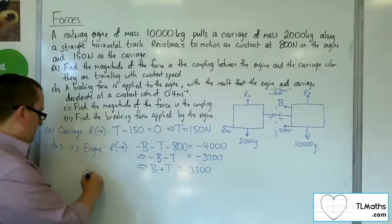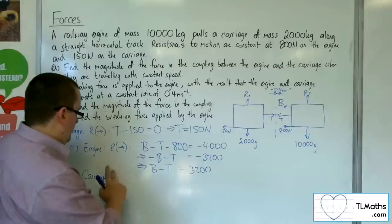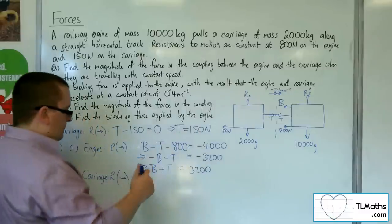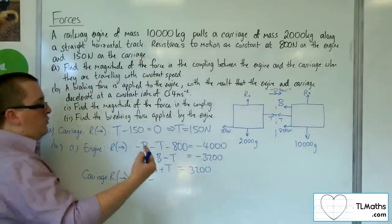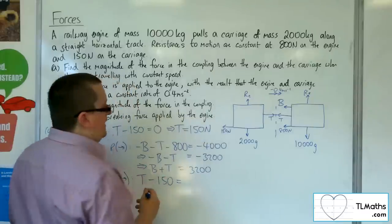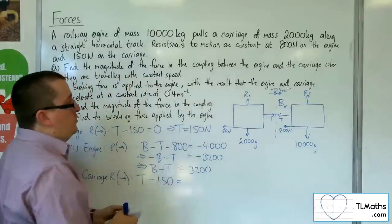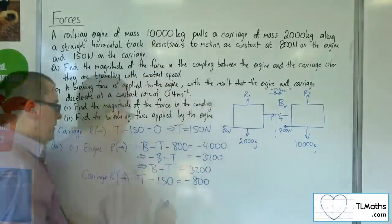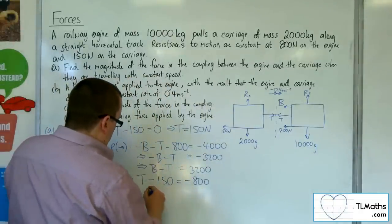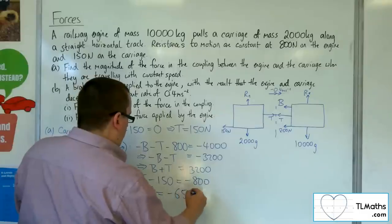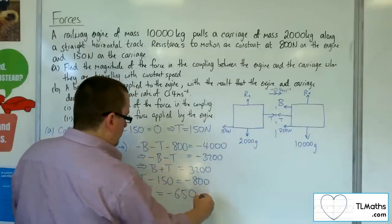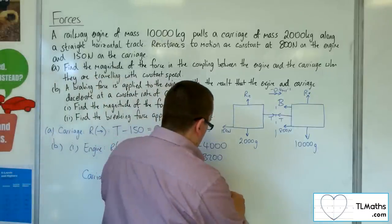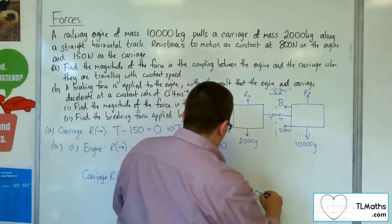For the carriage, resolving horizontally and taking right as positive: tension T minus 150 equals mass 2,000 times acceleration minus 0.4, giving minus 800. Adding 150 to both sides gives tension T equals minus 650 newtons. We are asked to find the magnitude of the force in the coupling, so the actual magnitude is 650 newtons.